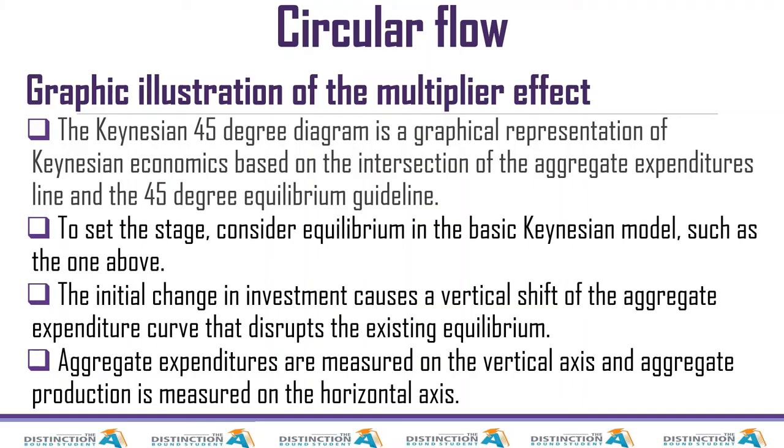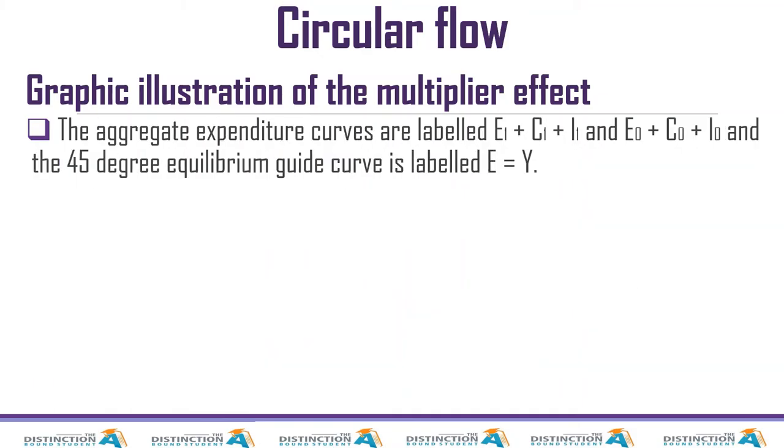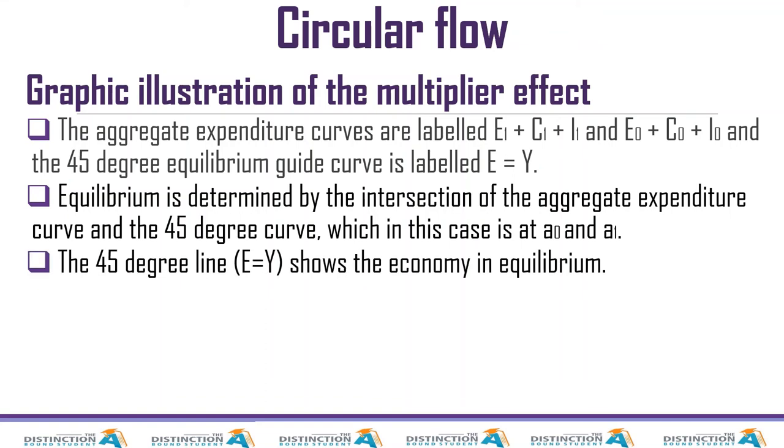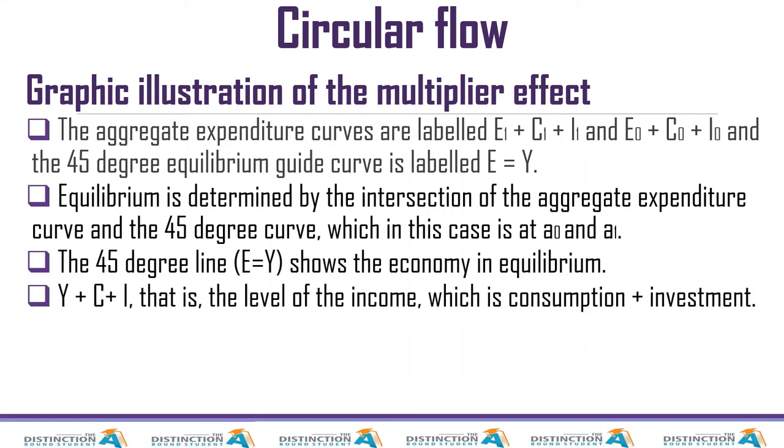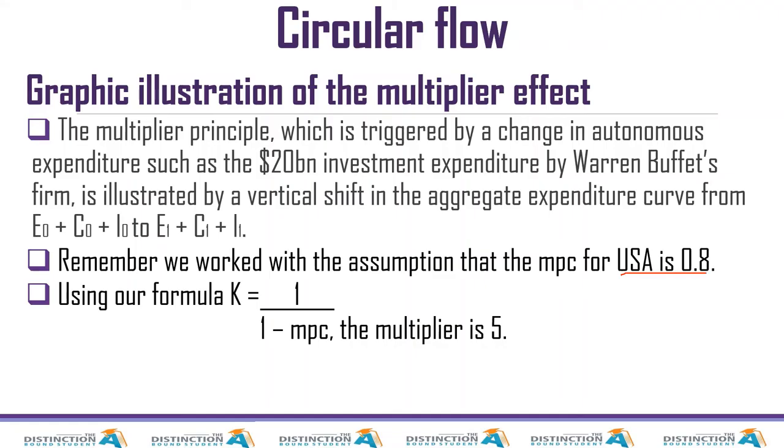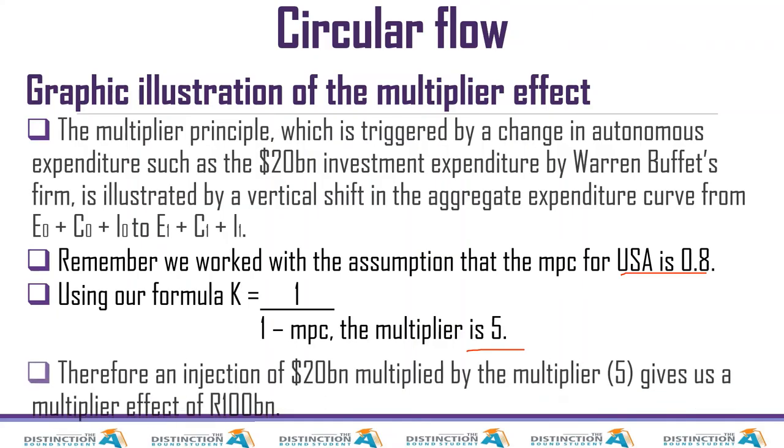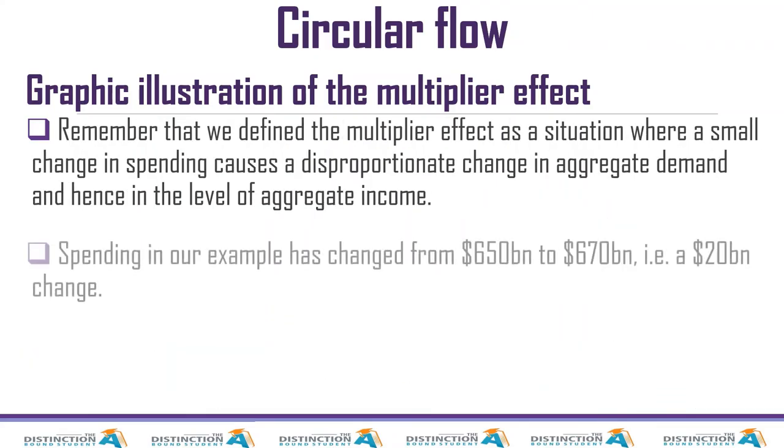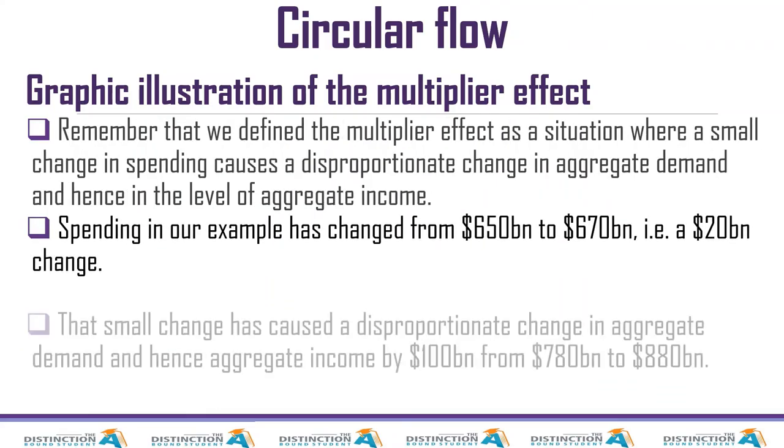So aggregate expenditures are measured on the vertical axis and aggregate production is measured on the horizontal axis. So this is just explaining the things that I was explaining. So yes, you can read word for word, and yes, I've also reminded you on this. I've also calculated it and you have seen it, right? So there isn't much for me to say now because I've explained everything.